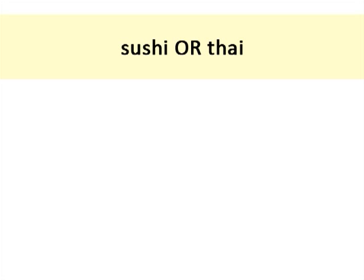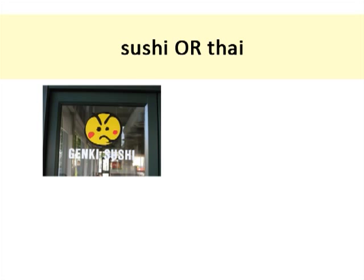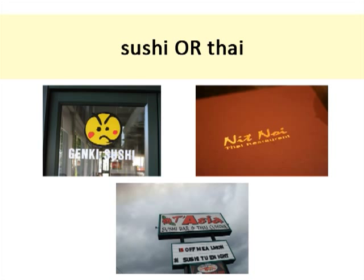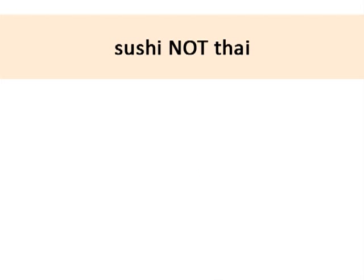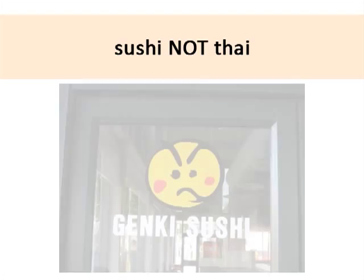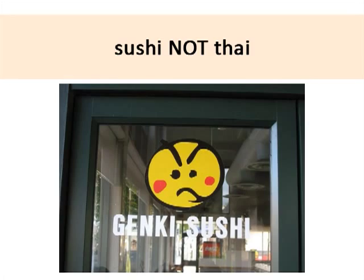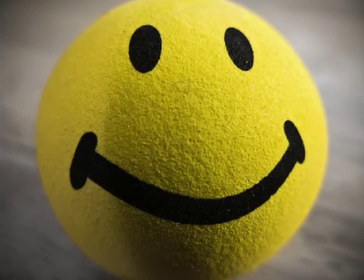A restaurant that serves sushi OR Thai could potentially just serve sushi, just serve Thai, or serve both. Finally, if a restaurant serves sushi NOT Thai, they can only go to the sushi restaurant. Clearly, John and Jane should go with the restaurant that serves sushi AND Thai so both of them can be happy.